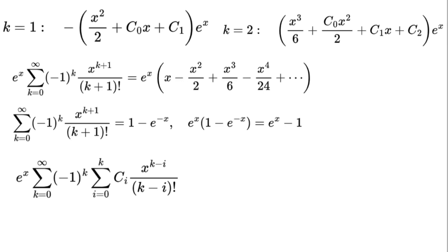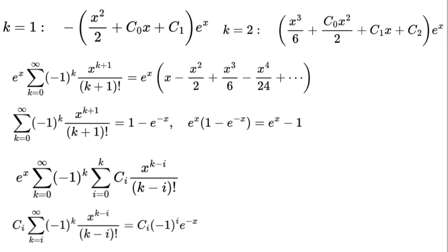For each constant cᵢ: cᵢ times the sum from k equals i to infinity of negative 1 to the power of k times x to the power of k minus i over (k minus i) factorial equals cᵢ times negative 1 to the power of i times e to the power of negative x.